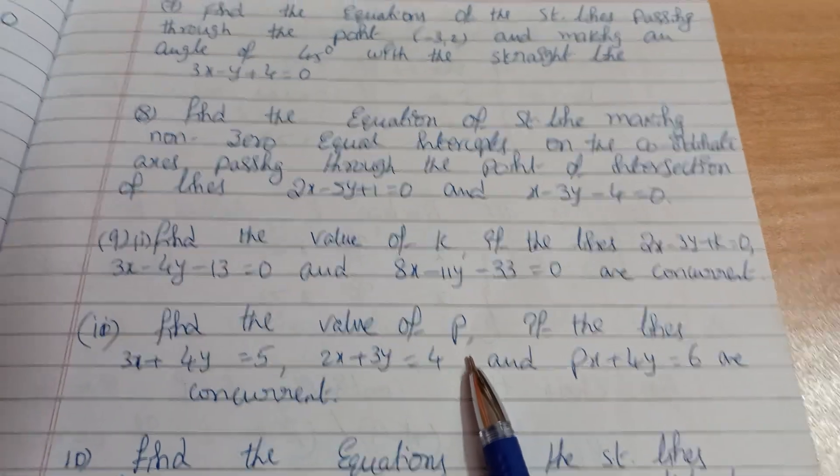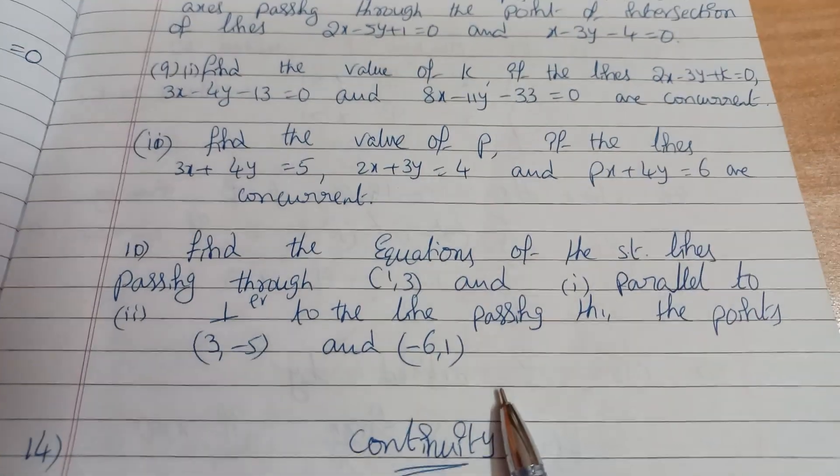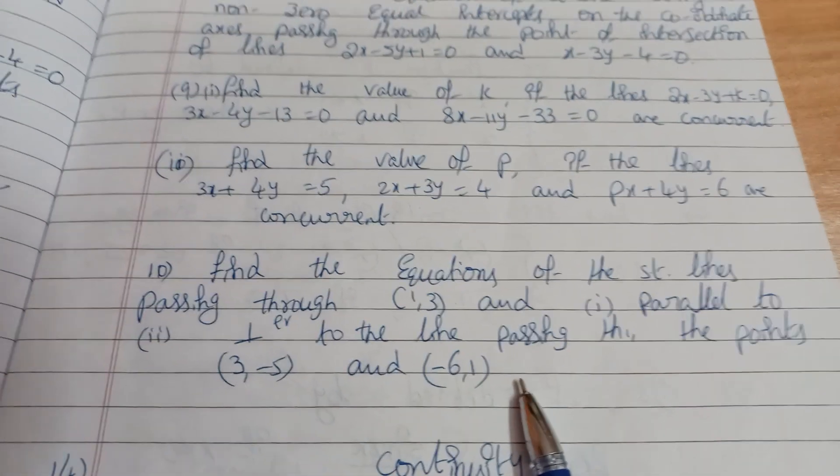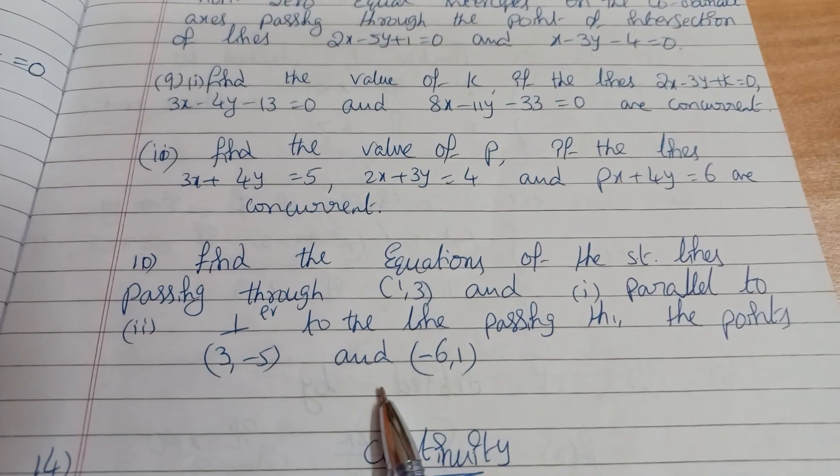For concurrent lines, find the P value. This completes the straight line section. Next, find parallel lines.